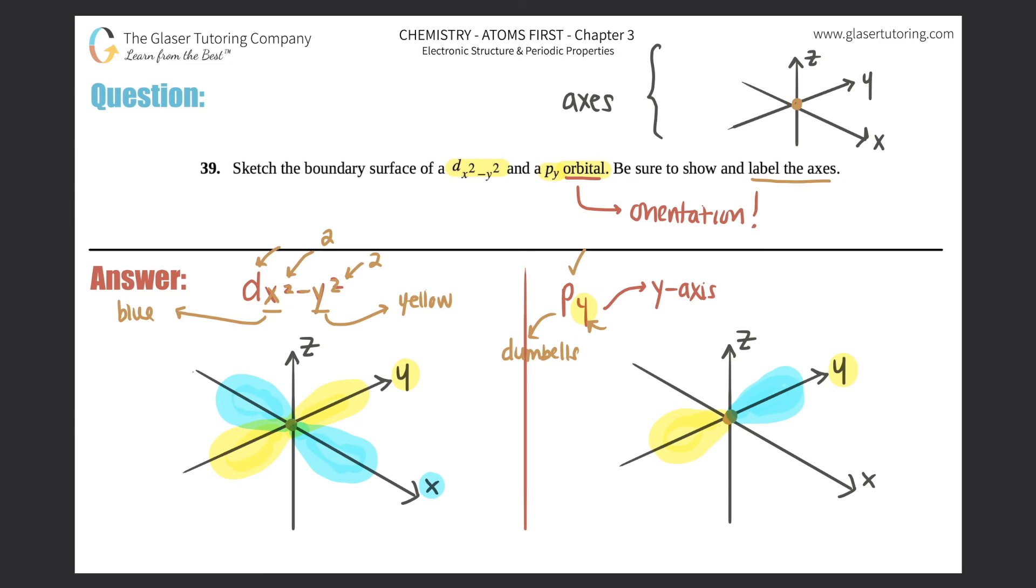As opposed to the py, the d has four different balloons technically and the p has only two balloons away from the nucleus if you want to think of it that way. But that's how you guys would draw it. So memorize these axes. That will help you out a lot when you're drawing.